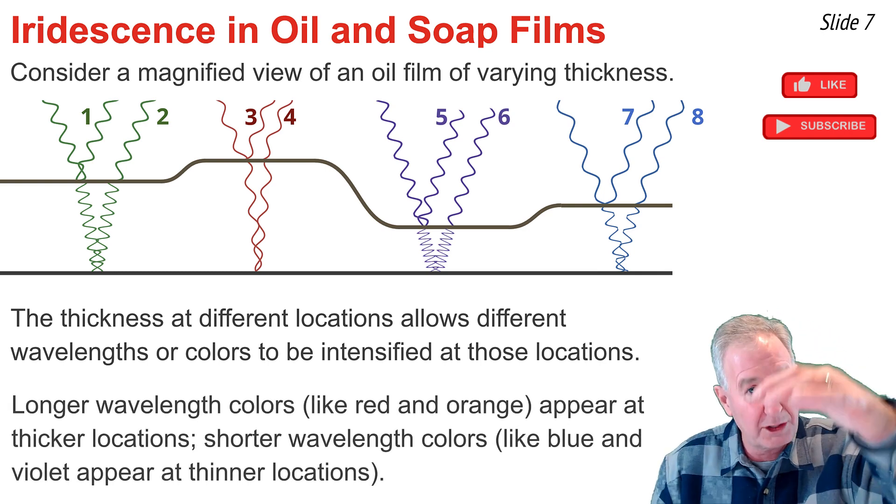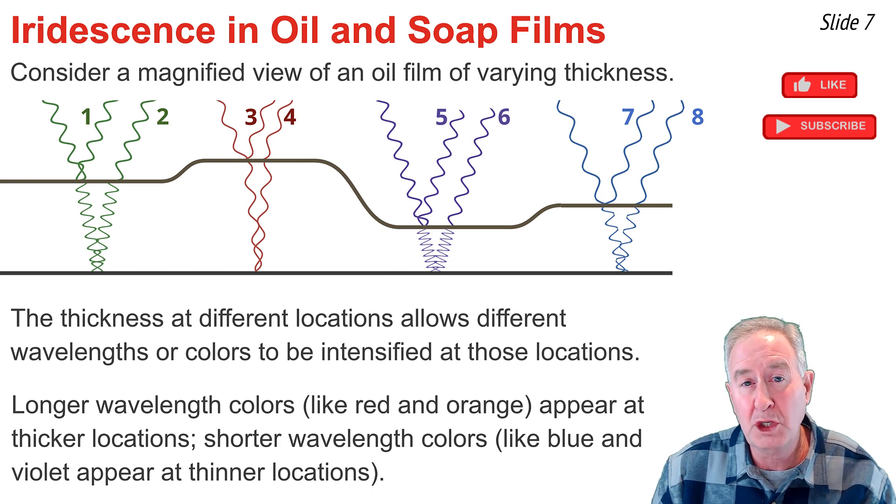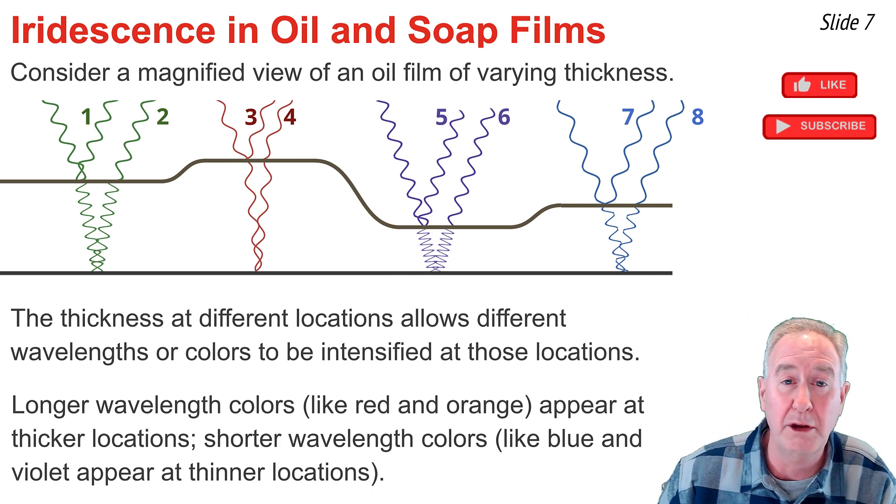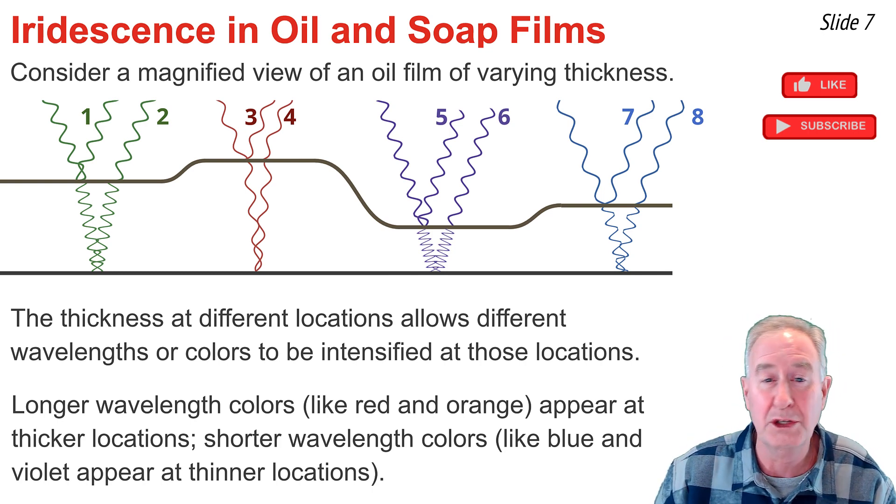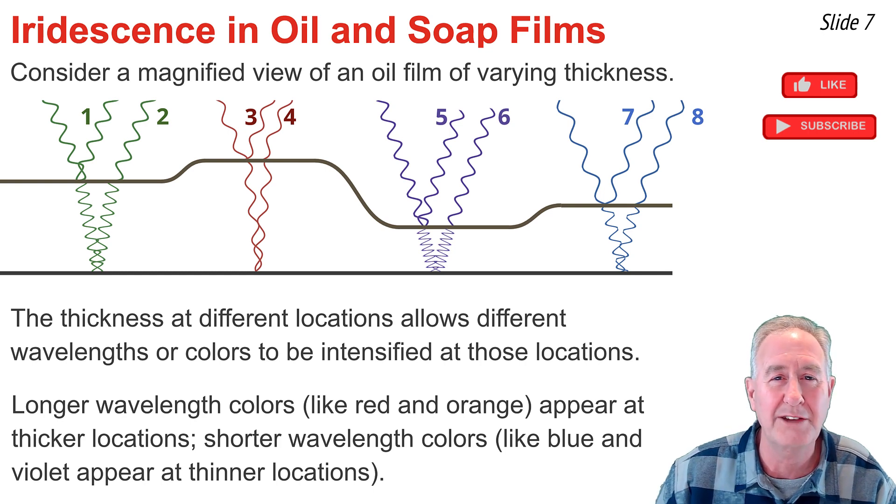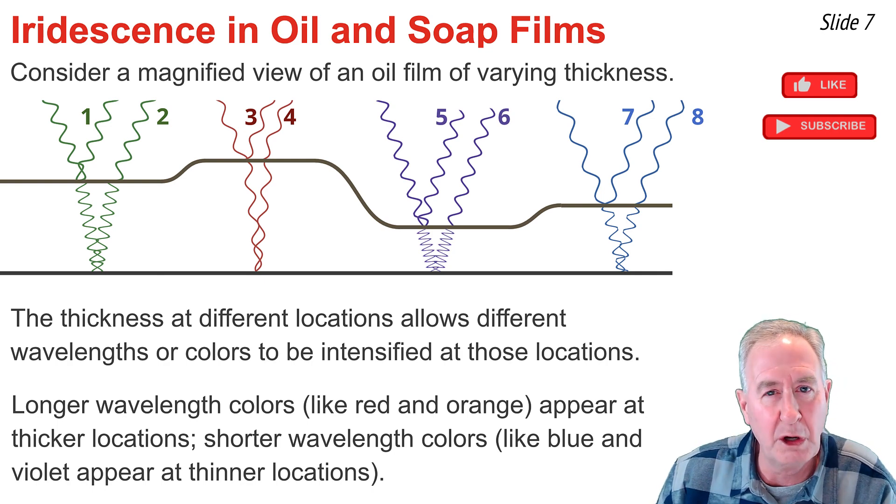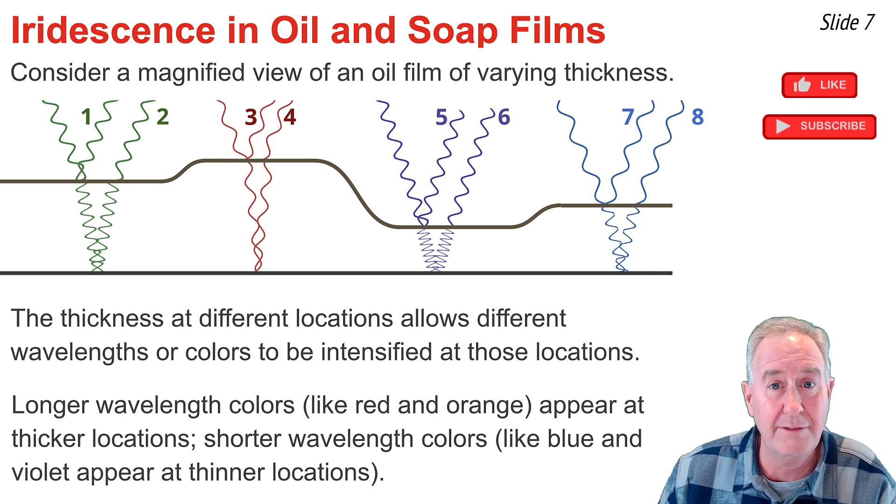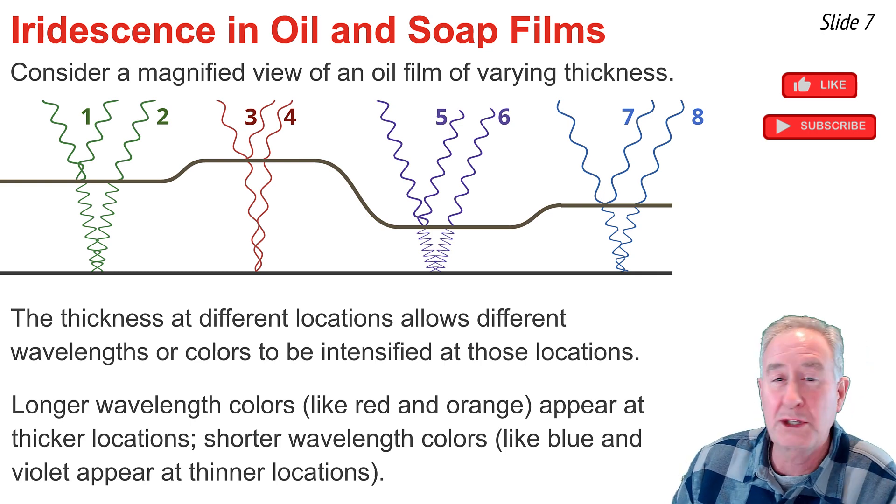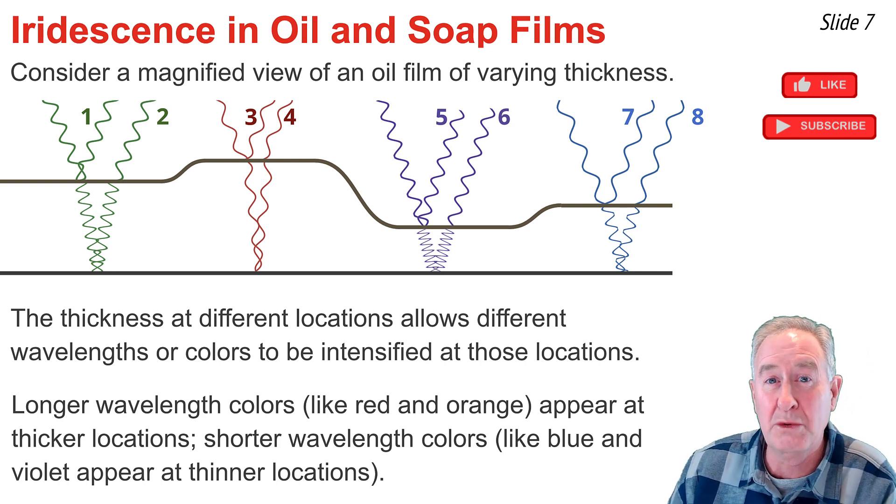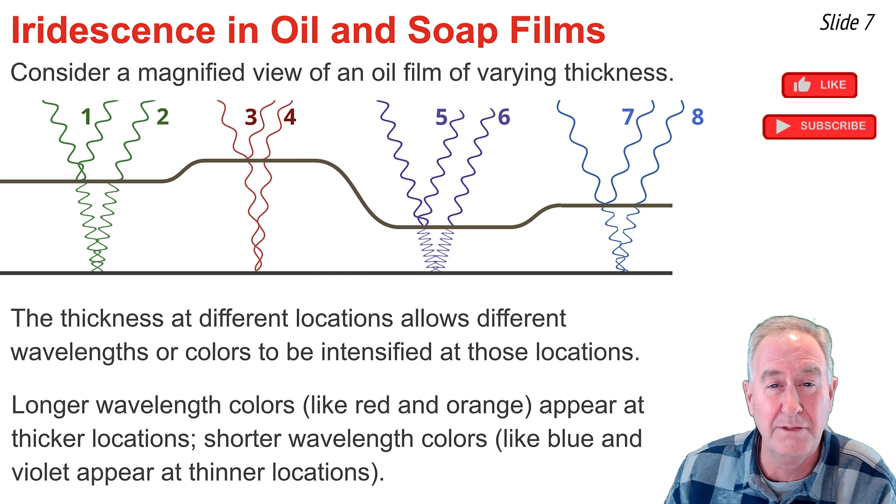So for example, Roy G. Biff strikes the top surface of the film. Each color is associated with a different wavelength with the red colors being the longer wavelength waves and the violets being the shorter wavelengths, shorter wavelength colors. So at the thicker locations for say an n value of one, we would observe the reds being reinforced and constructively interfering and intensified in brightness. So you'll notice that's true for waves three and four.